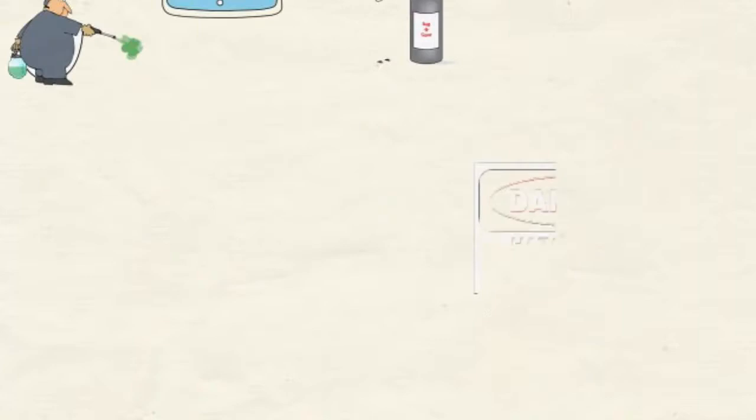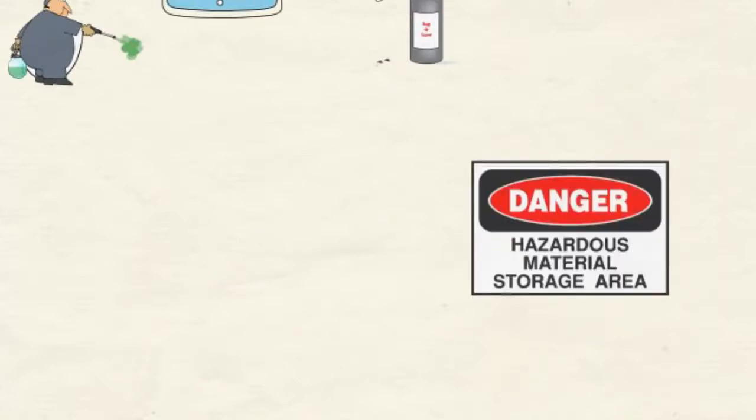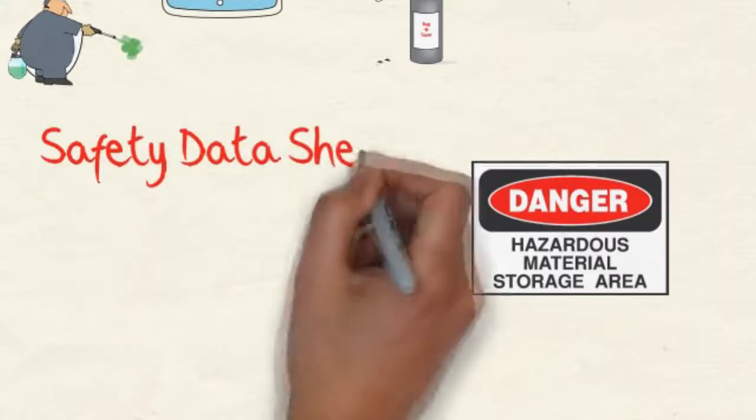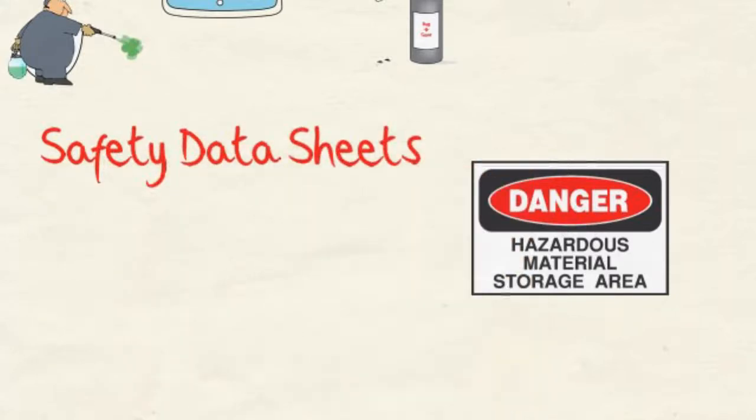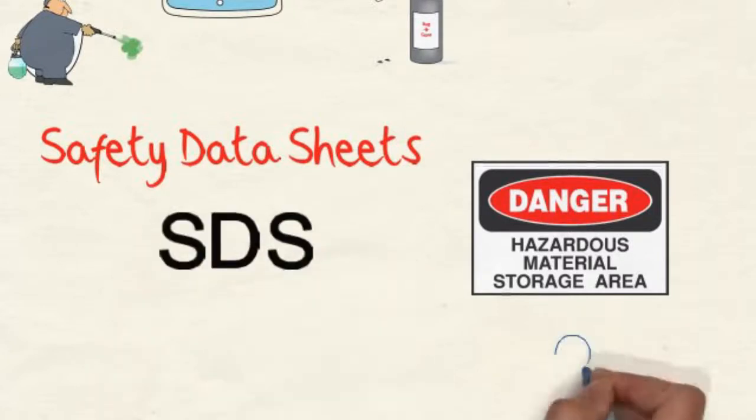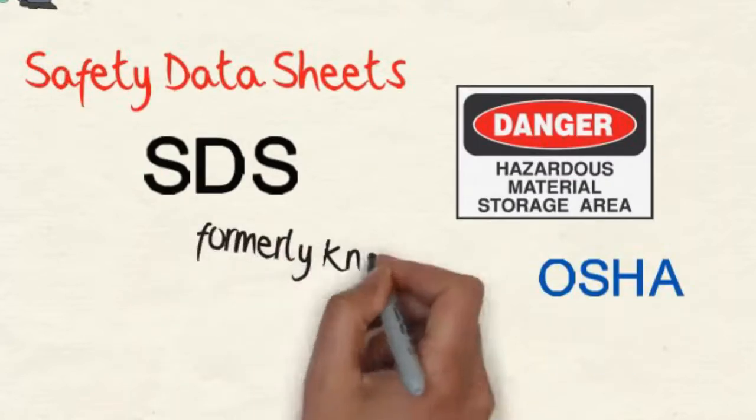Before using any chemical product, you should find out all you can about it, and this information is literally at your fingertips in free publications called Safety Data Sheets or SDSs.